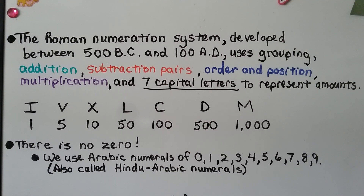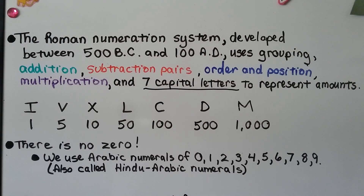There is no zero in the Roman system. We use the Arabic numerals of 0, 1, 2, 3, 4, 5, 6, 7, 8, 9 — also called the Hindu-Arabic numerals.